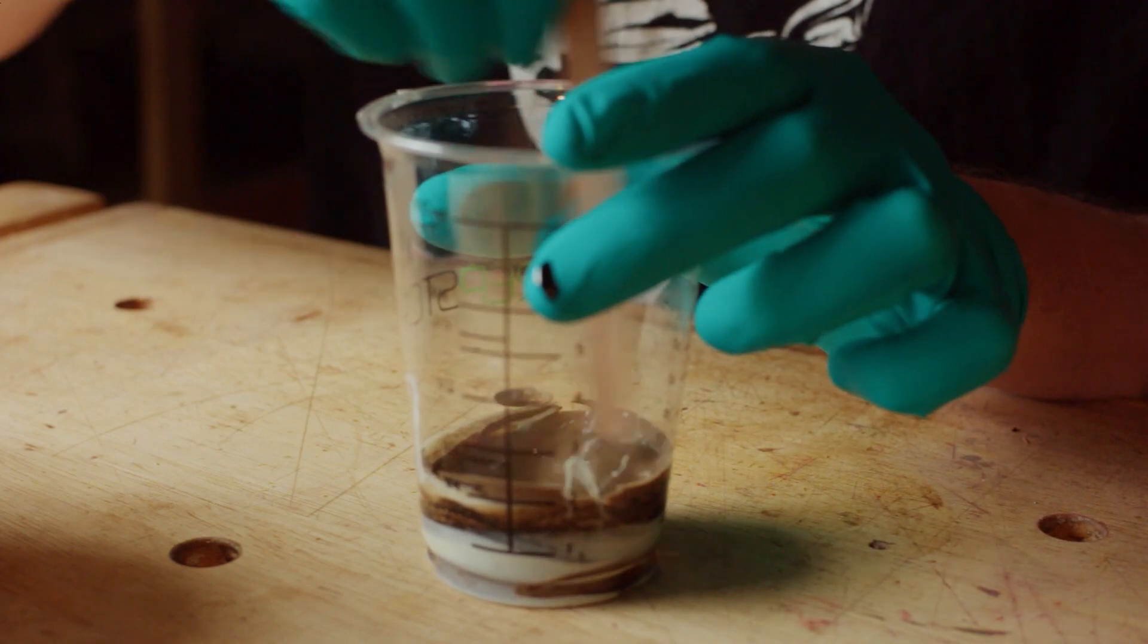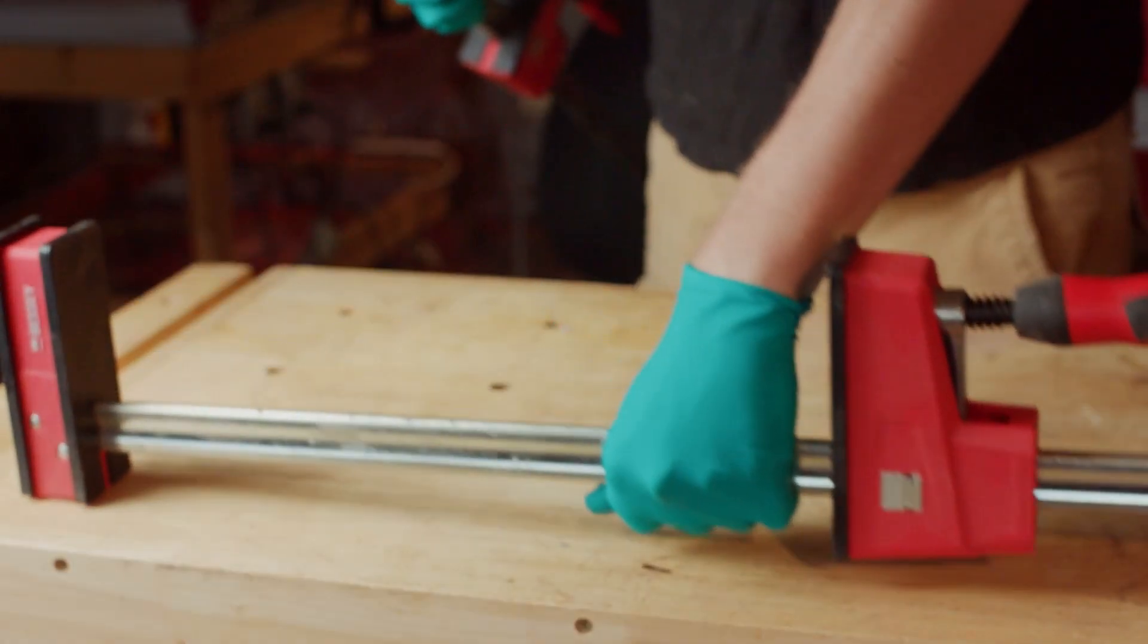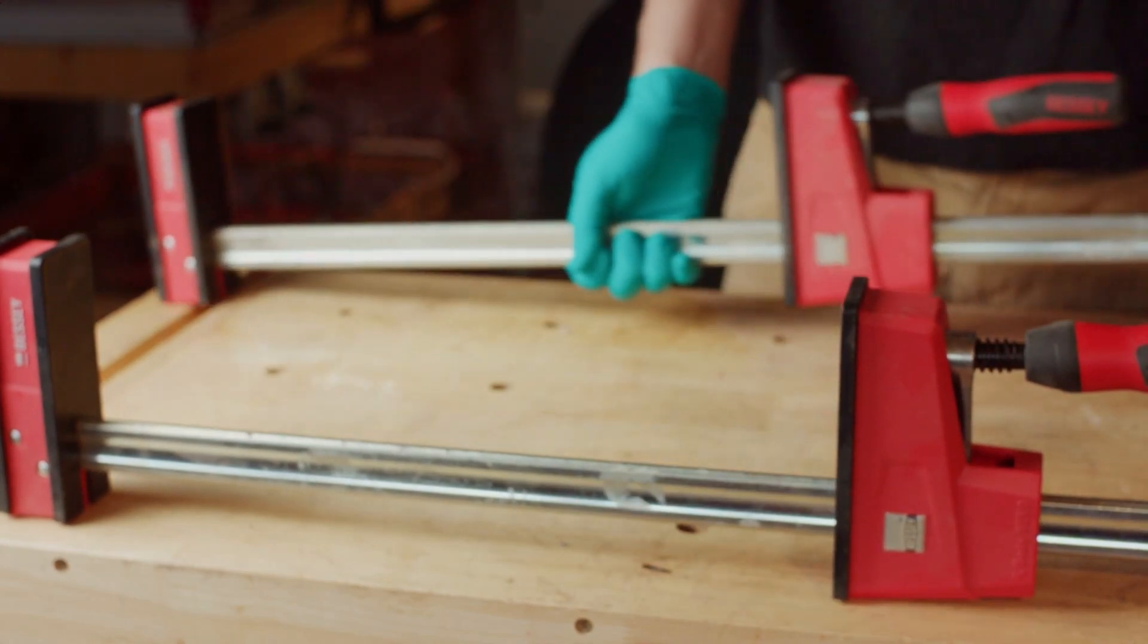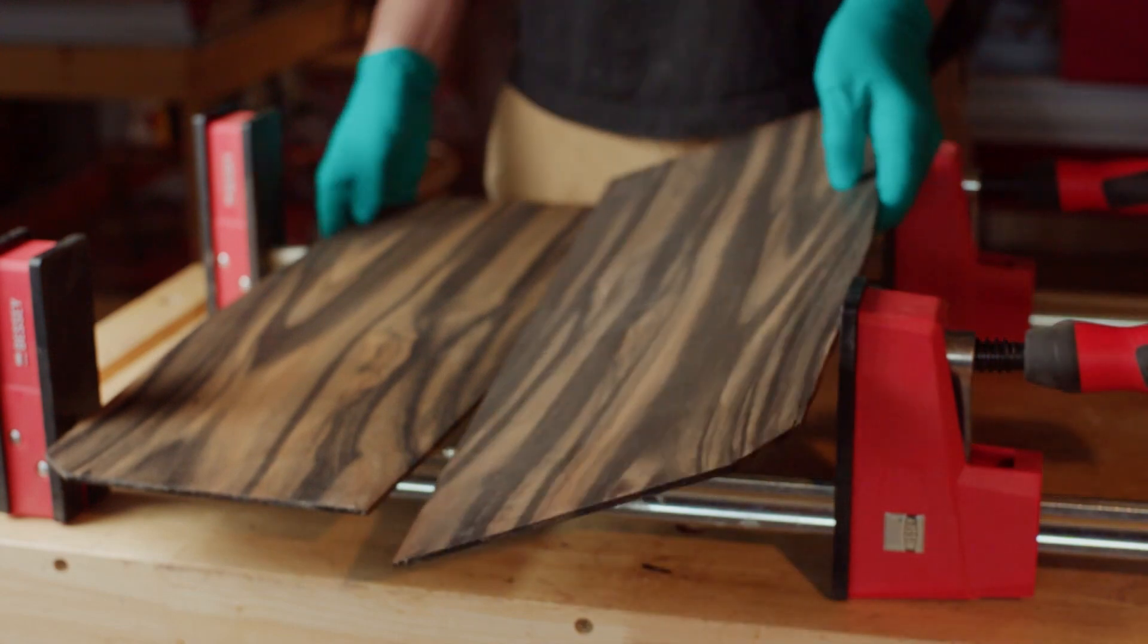Avoid falling into the trap of more is better. The cohesive relationship of PVA is much lower than when combined and interlinked with the wooden structure. A thin and even wetting will usually make for the best joint.